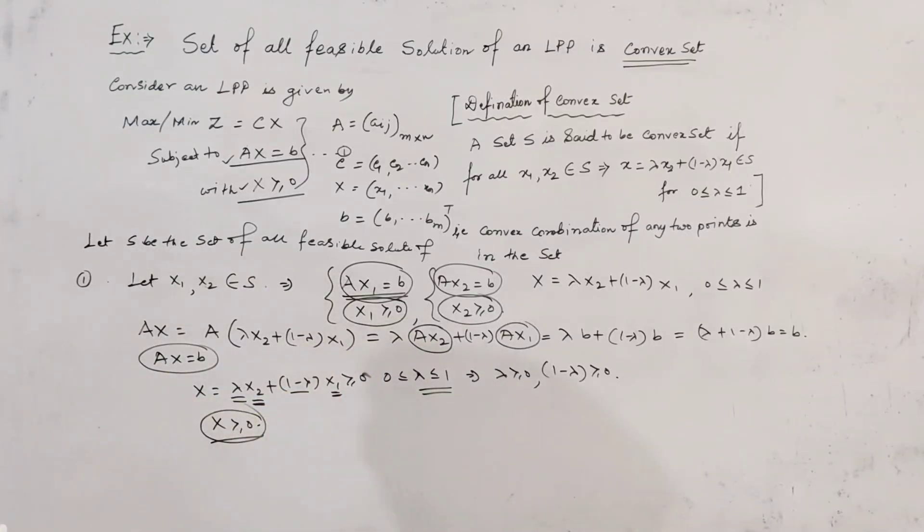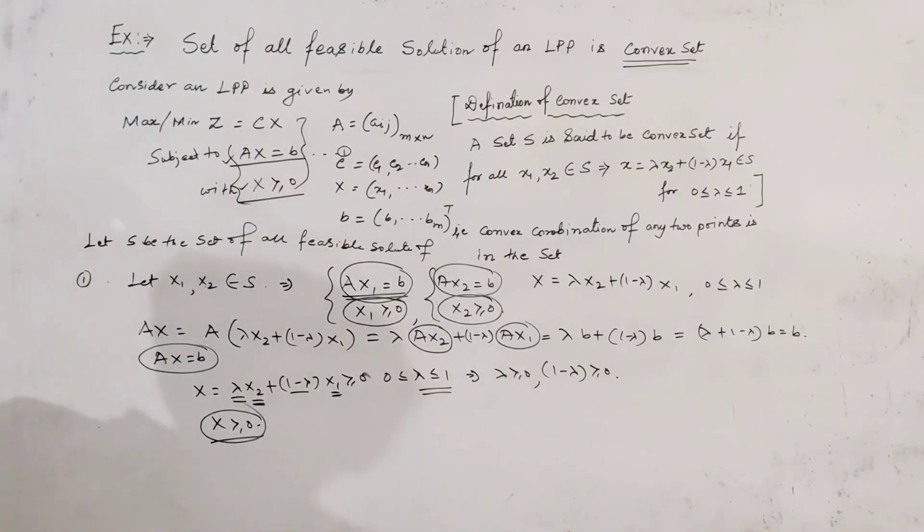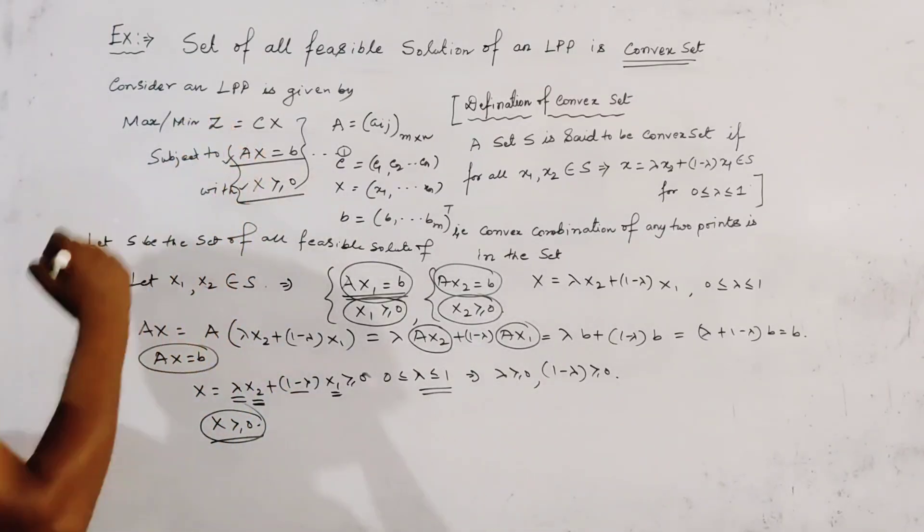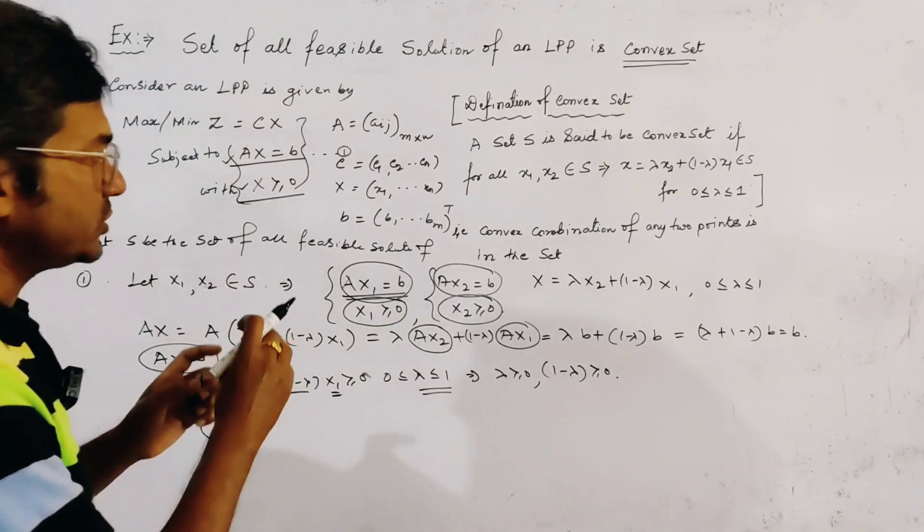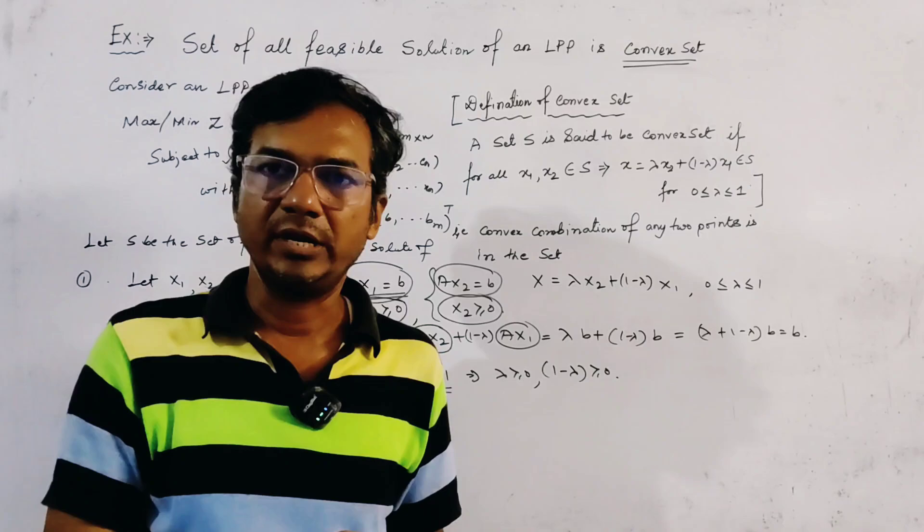we get the second condition of the feasible solution. Hence, we say that, the set of all feasible solution of an LPP, we say, the LPP is like this. This is the general form of LPP. And, this feasible solution set, must be the convex set.